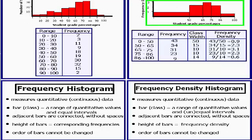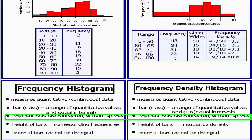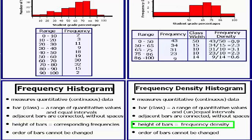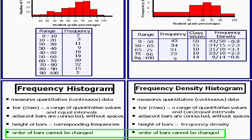Now this doesn't always have to be the case — you can have a frequency density histogram which has equally spaced out bars or columns. In both the frequency histogram and the frequency density histogram, adjacent bars are connected without spaces, unlike the bar graph we touched on last session. Another distinction is that in the case of the frequency histogram, the height of the bars corresponds to frequencies, whereas in the frequency density histogram, the height corresponds to frequency density. Also, the order of the bars cannot be changed, unlike the bar graph.